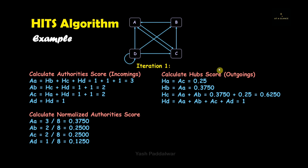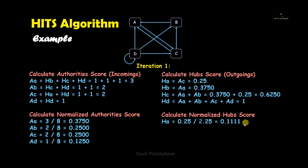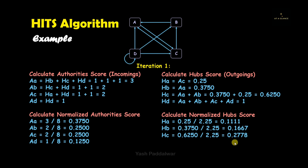Now we normalize the hub scores by adding all hub scores and dividing each by that sum. The total is 0.25 + 0.375 + 0.625 + 1 = 2.25. Dividing each hub score by 2.25 gives the normalized hub scores. These normalized hub scores will be carried forward to calculate the authority scores in the next iteration.